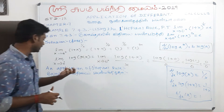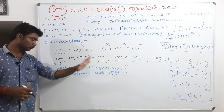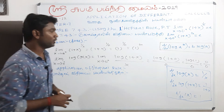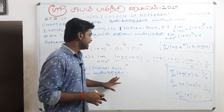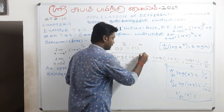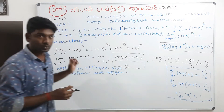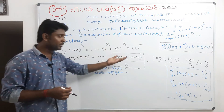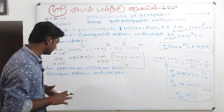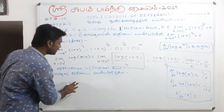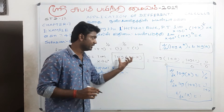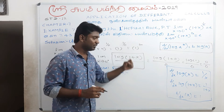Since we have the 0 by 0 indeterminate form, we apply L'Hôpital's rule. We differentiate the numerator and denominator separately with respect to x. So we take d by dx of log(1 plus x) in the numerator, and d by dx of x in the denominator.